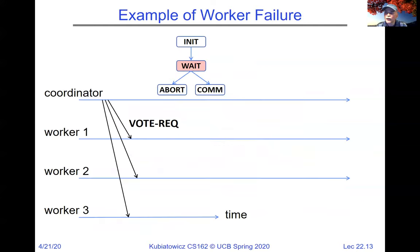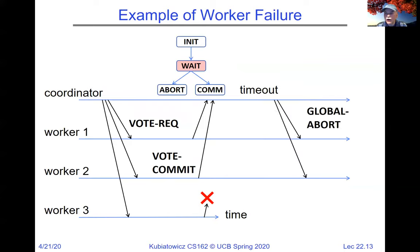Here's an example of a worker failure: the coordinator sends out requests but only two come back and nothing happens. Eventually there's a timeout and the decision is made to abort. Since that's recorded in the log, even if the coordinator crashes and comes back up, there'll never be confusion. If worker three eventually reboots, it can ask the coordinator and find out that abort was the decision.